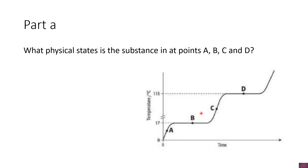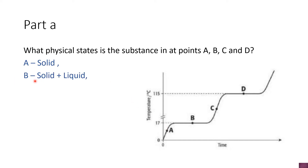For points A and C: at point A the substance is solid. At point C the substance is liquid, because the phase change has completed and the solid has completely changed to liquid. So the answers are — A: solid; B: solid and liquid; C: liquid; D: liquid and gas.